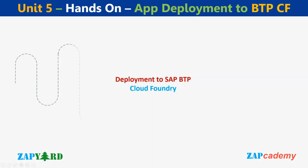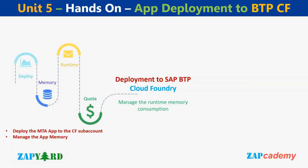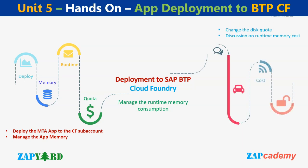Unit 5 will be another hands-on session, building upon the previous session's teachings. Our focus will be deploying the MTA-based SAPUI5 app to the Cloud Foundry sub-account built in the previous unit. During this session, we will cover the management of application memory and runtime memory consumption. Participants will also learn how to modify the disk quota and engage in an in-depth discussion regarding the runtime memory cost of the application.